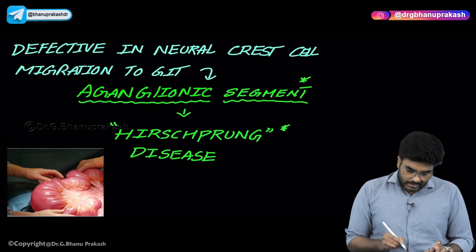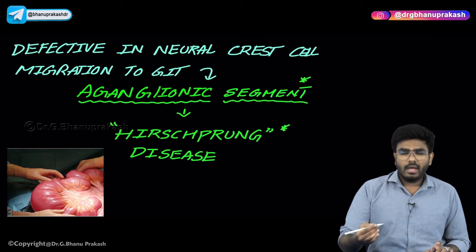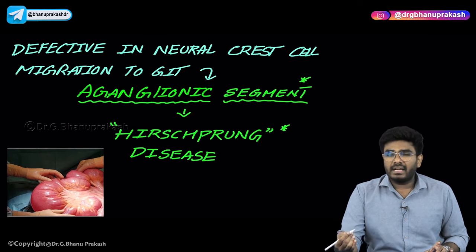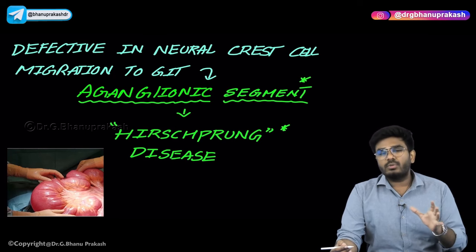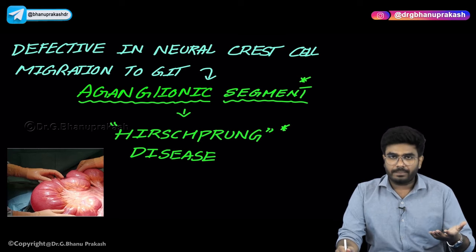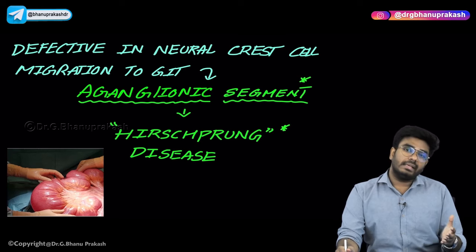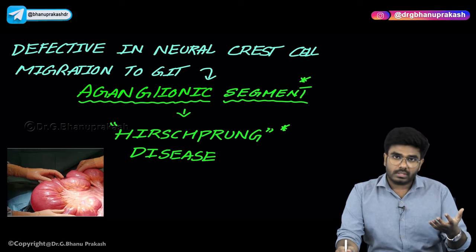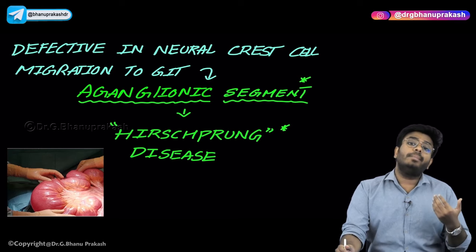Now as we are discussing about nerve innervations - these nerves, the myenteric plexus and Meissner's plexus together are called the enteric nervous system. There are almost 100 million neurons in the GI tract. Because it has so many neurons, we call this enteric nervous system the 'little brain'.